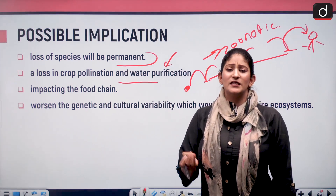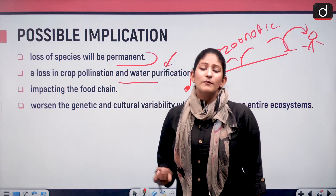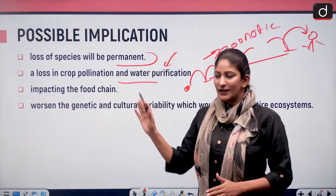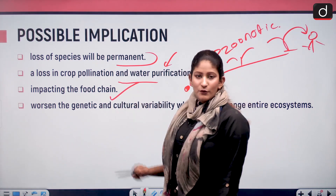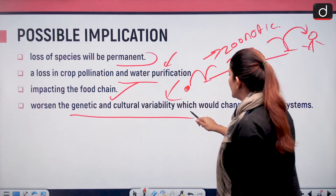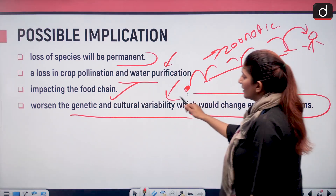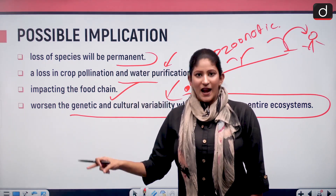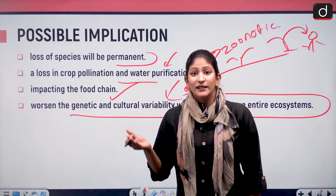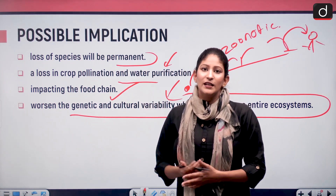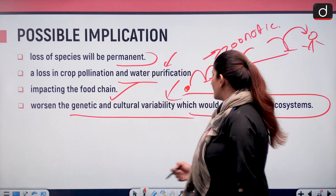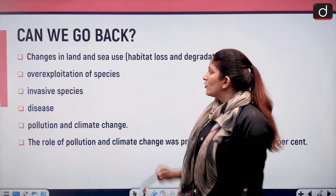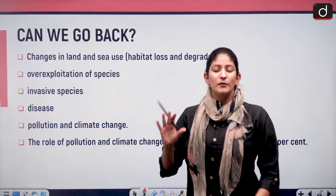A loss in crop pollination and water purification is another implication — dragonflies, bees, and birds are very important for crop pollination and food security, and that will be lost. It will impact the food chain and worsen genetic and cultural variability, which could change the entire ecosystem. New pathogens could arise which animal bodies cannot understand, and the working of new strains could cause collapse. This is something very fearsome.